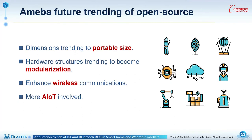Amoeba IoT open source team is working hard and willing to have more communication with talented makers like you. There are some future trends. If we recall the EVB introduction, we notice that the EVB size is getting smaller and smaller — the dimension trends toward being more convenient and portable. Modularization is another trend, and we are at the starting point seeking more opportunities to cooperate. Enhanced wireless communications will also be supported. AI is the most popular technology in recent years, and AIoT is merged from IoT and AI. The Amoeba open source SDK already has some outcomes with AIoT, and there will be more support in future.